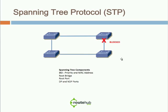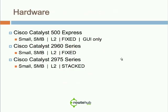Let's talk about some hardware. There are a wide variety of hardware options — using Cisco as an example, Juniper has switching hardware, and Foundry Force 10 also has switching hardware. One of the lowest-end options for small and SMB businesses is the Cisco Catalyst 500 Express, which provides only Layer 2 capabilities such as VLAN support.